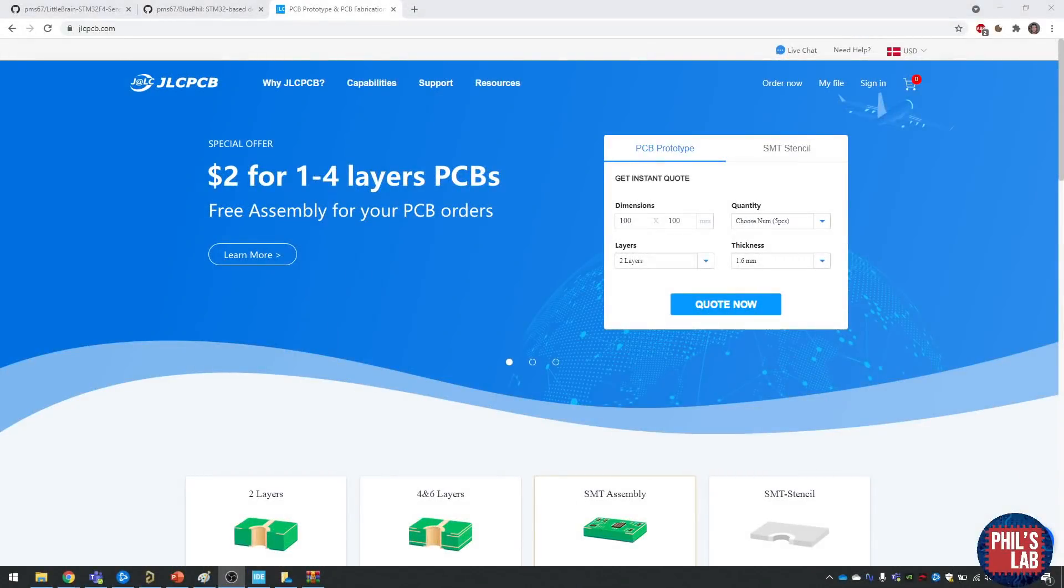The Little Brain board you saw at the beginning was actually manufactured and assembled by JLCPCB in China. They have a special offer going on which is two dollars for one to four layer PCBs, which is pretty amazing. The Little Brain is a four layer PCB and you can get that starting from two dollars, then of course plus assembly costs.